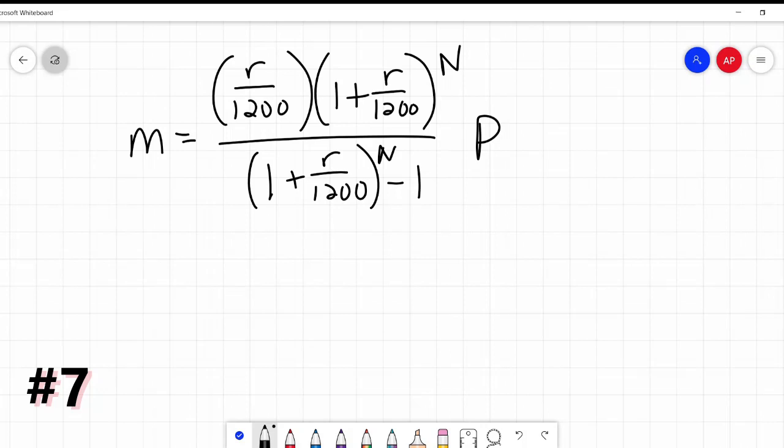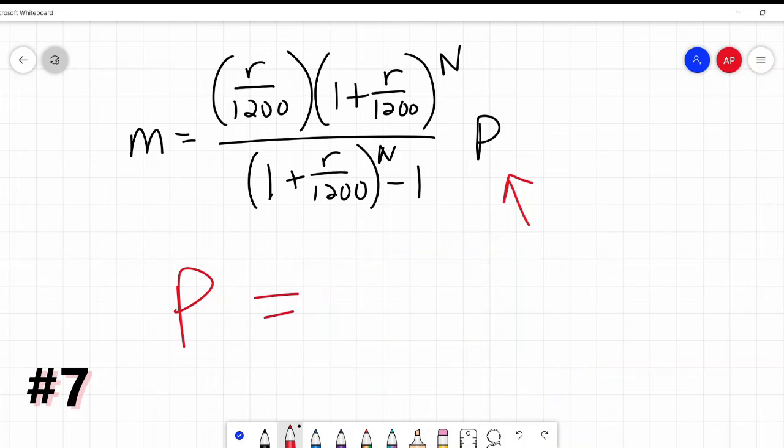But here's the question: Which of the following gives P in terms of M, R, and N? Anytime it says which of the following gives P in terms of this, they're wanting you to get P by itself and equals and everything else on the right hand side. That's what they're looking for.